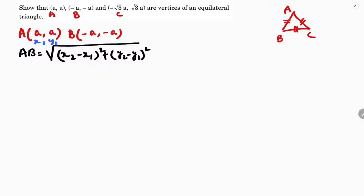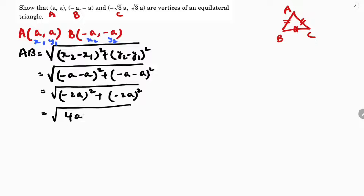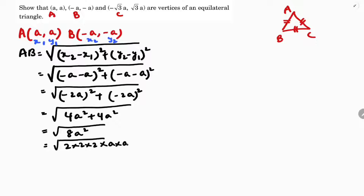Here A is (a, a) and B is (-a, -a), so these are x₁, y₁ and x₂, y₂. Substituting the values: (-a - a)² + (-a - a)² = (-2a)² + (-2a)² = 4a² + 4a² = 8a². We can write 8a² = 2 × 2 × 2 × a × a, so taking 2 and a outside the root gives us AB = 2a√2.